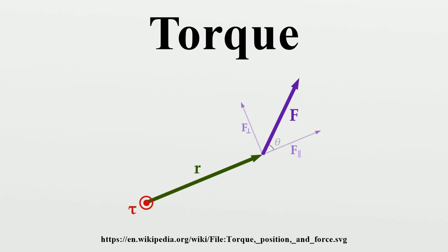In imperial units, pound-force feet, foot-pounds force, inch-pounds force, and ounce-force inches are used. Other non-SI units of torque include meter kilograms force. For all these units, the word force is often left out; for example, abbreviating pound-force foot to simply pound-foot. This is an example of the confusion caused by the use of English units that may be avoided with SI units, because of the careful distinction in SI between force and mass. Torque is sometimes listed with units that do not make dimensional sense, such as the gram-centimeter.